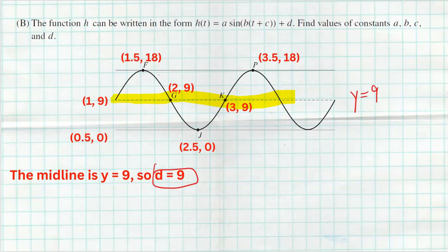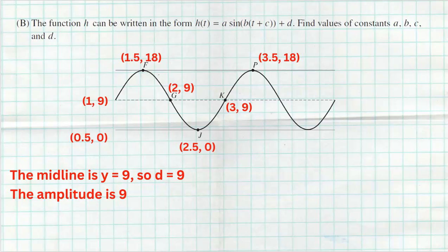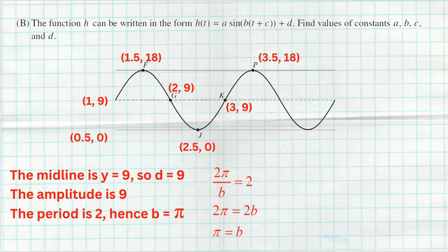The amplitude is how far we go up or down from the midline. From nine up to 18 is nine, and from nine down to zero is also nine, so the amplitude is nine. That means the absolute value of a is nine — it could be positive or negative depending on reflection. The period is two seconds, so using the formula period = 2π/b, we get b = π.